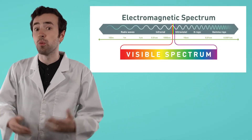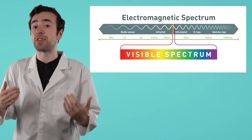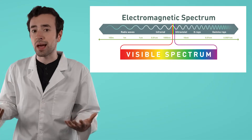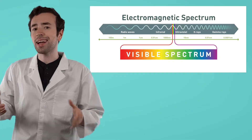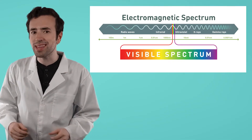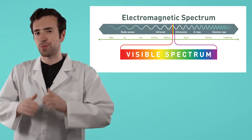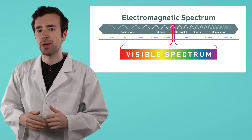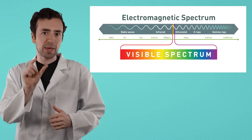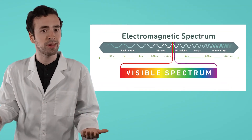Now, you might be thinking, there are types of light? Isn't there just light? Well, you may be surprised to learn that what we typically think of as light is actually only a tiny piece of the electromagnetic spectrum. We call that piece visible light.